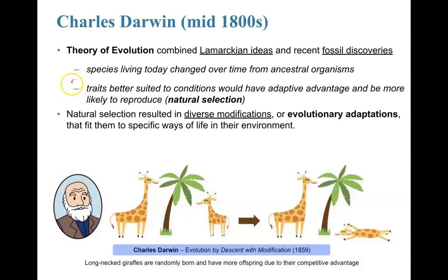Darwin proposed that traits better suited to conditions would have an advantage and be more likely to develop in offspring — more likely to help an organism reach sexual maturity and reproduce. This is called natural selection. Natural selection led to many diverse modifications that Darwin coined evolutionary adaptations, which made these organisms fit in their environment.